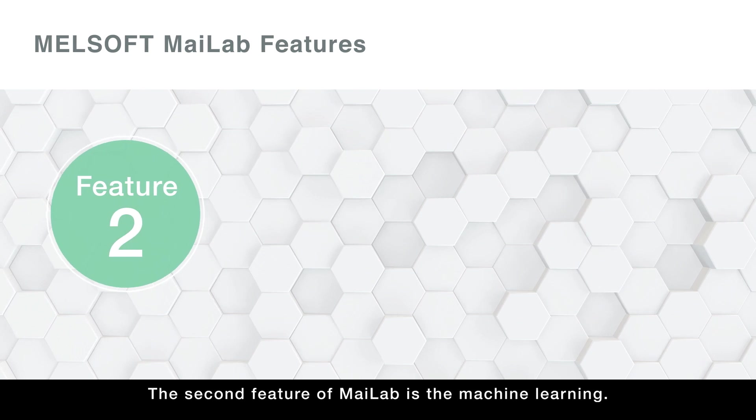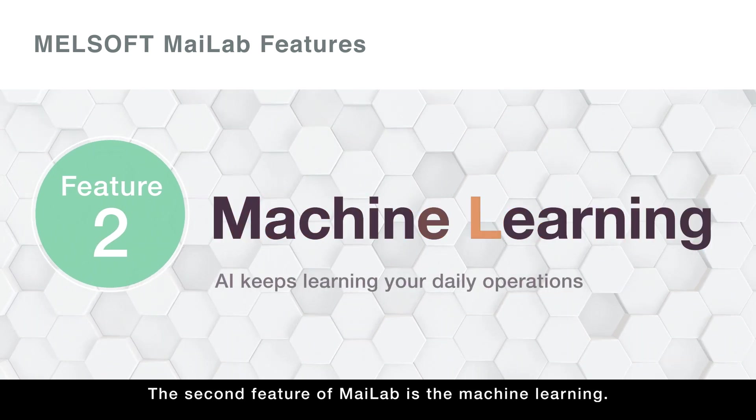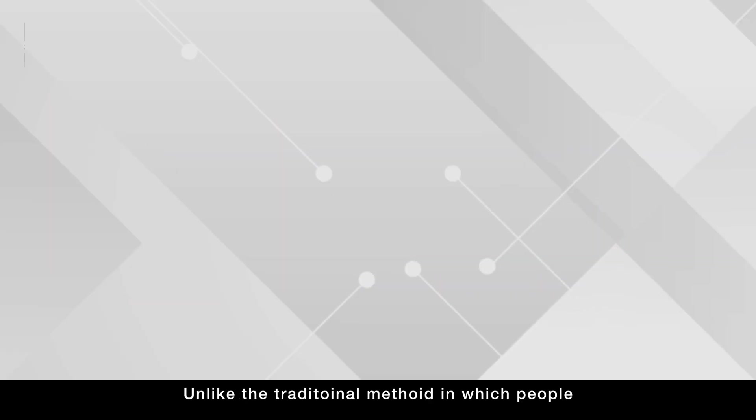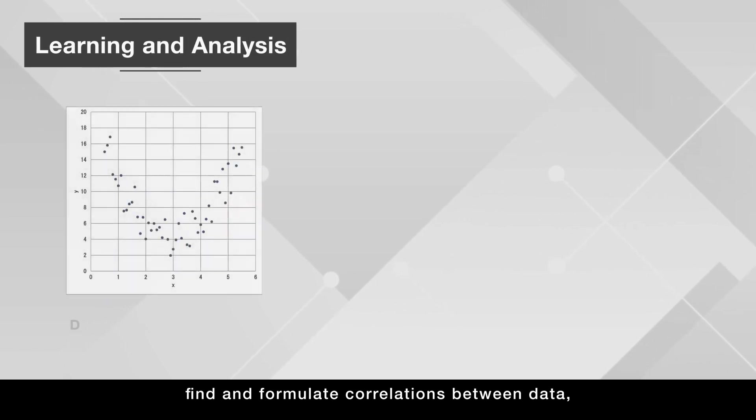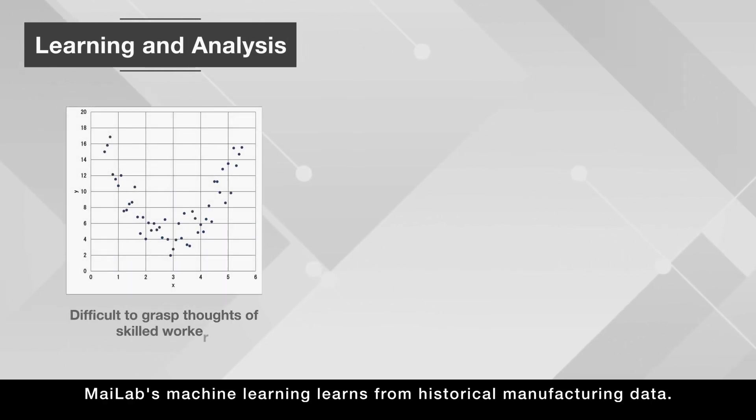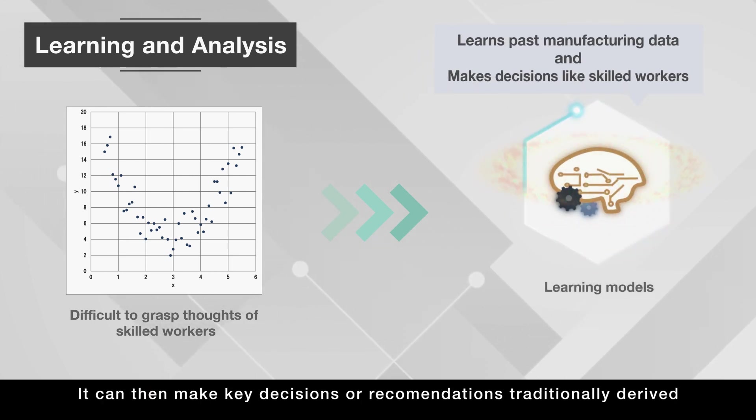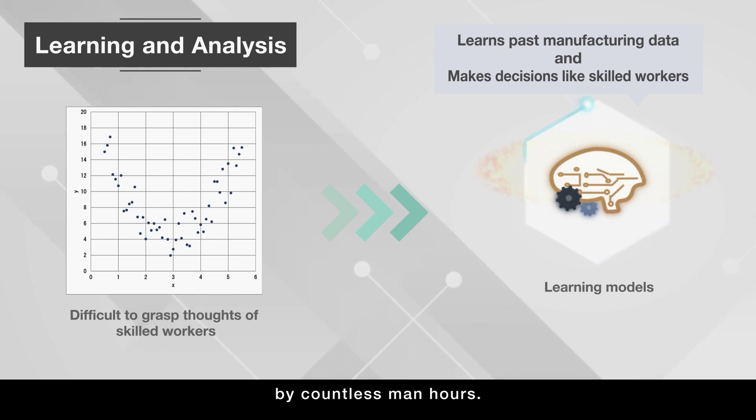The second feature of MyLab is machine learning. Unlike the traditional method in which people find and formulate correlations between data, MyLab's machine learning learns from historical manufacturing data. It can then make key decisions or recommendations traditionally derived by countless man-hours.